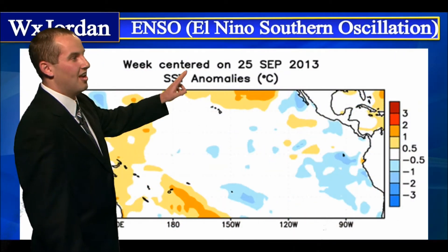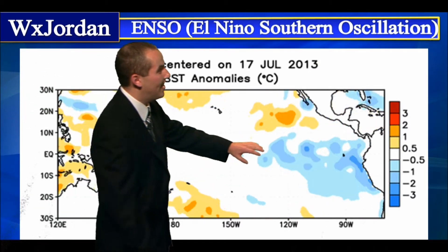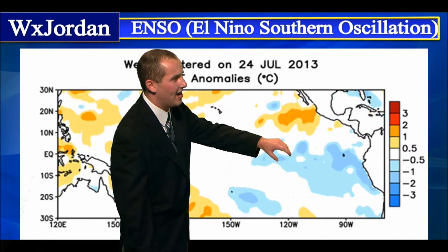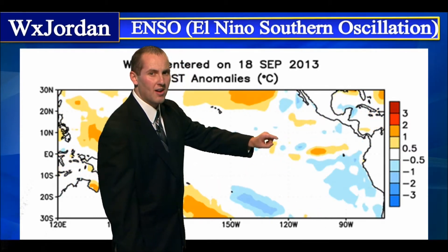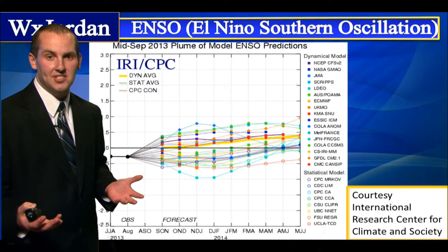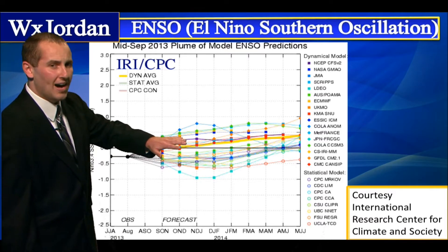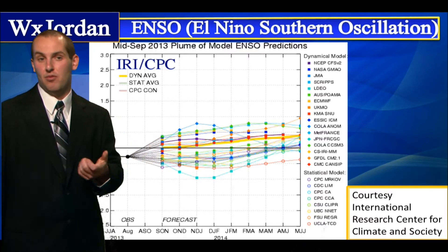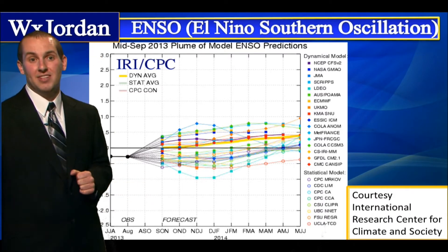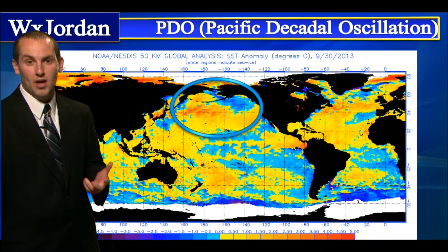Let's start out with ENSO — the El Niño Southern Oscillation. We're looking at the Pacific Ocean, the Western Pacific Ocean. You can see there is a lot of cool water right here right now. As we move forward, that cool water seems to be dissipating a little bit, meaning we're moving into a neutral phase of ENSO. We could possibly move into a more positive phase, which is very favorable for heavy, wet snow around this area. But it's not going to be a big factor into this year's winter weather forecast.